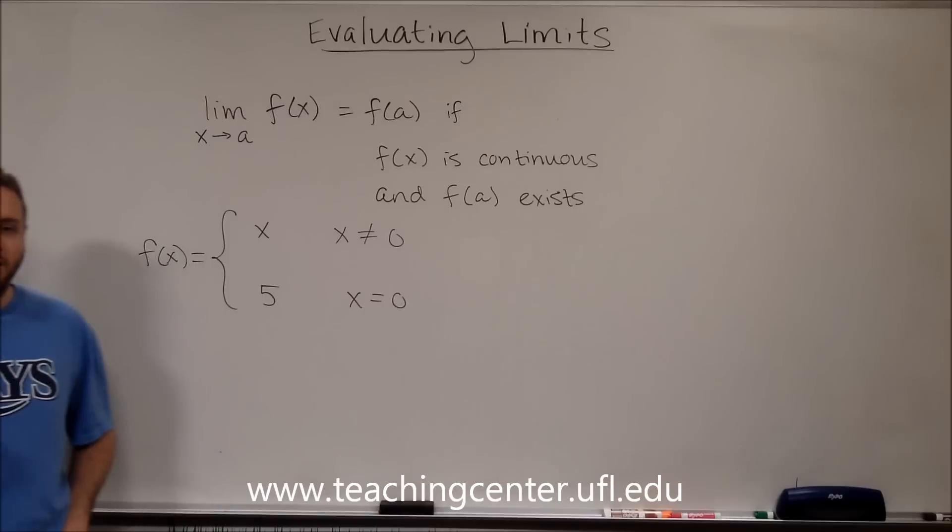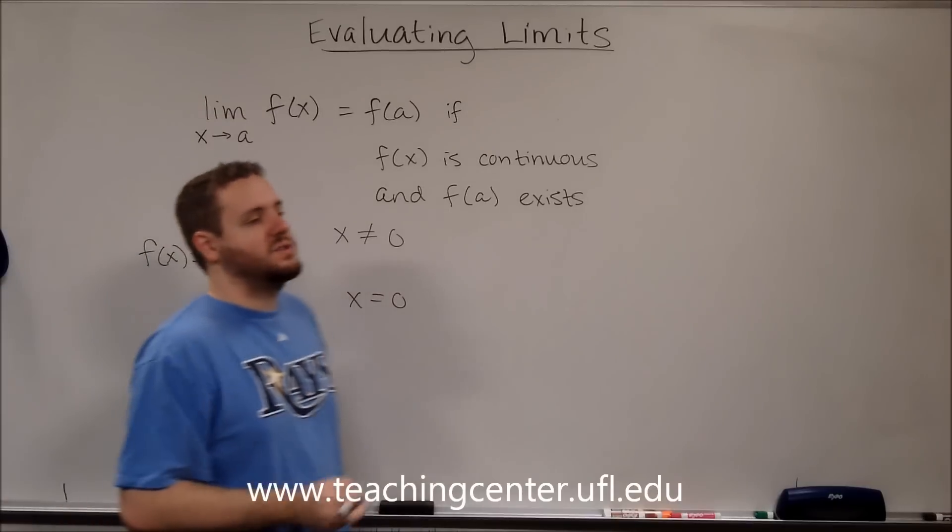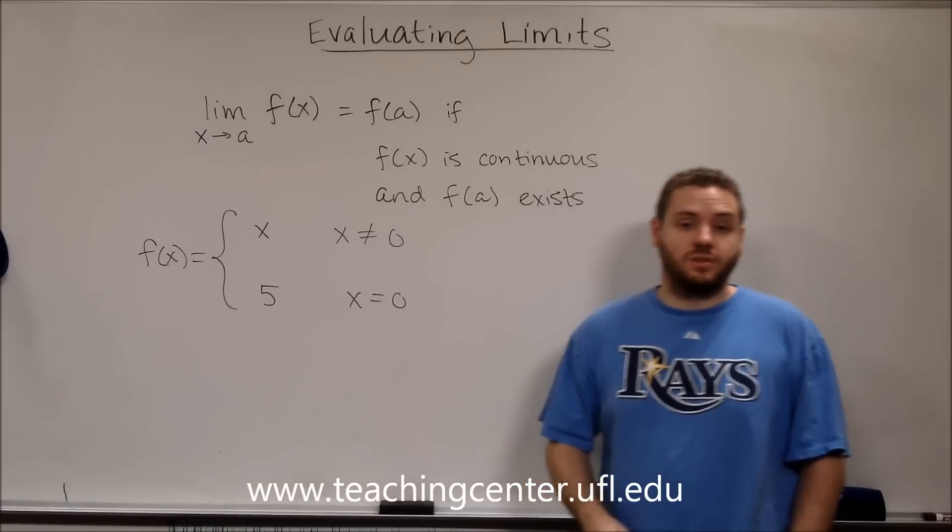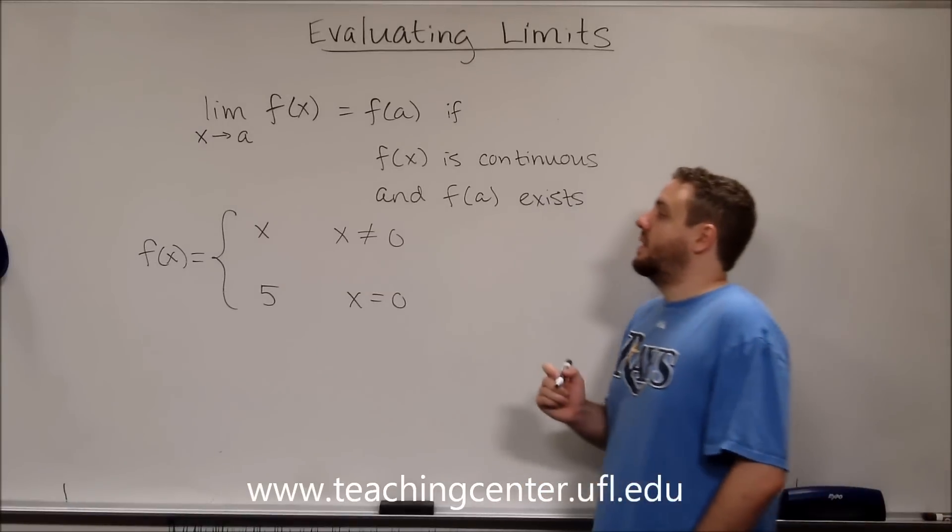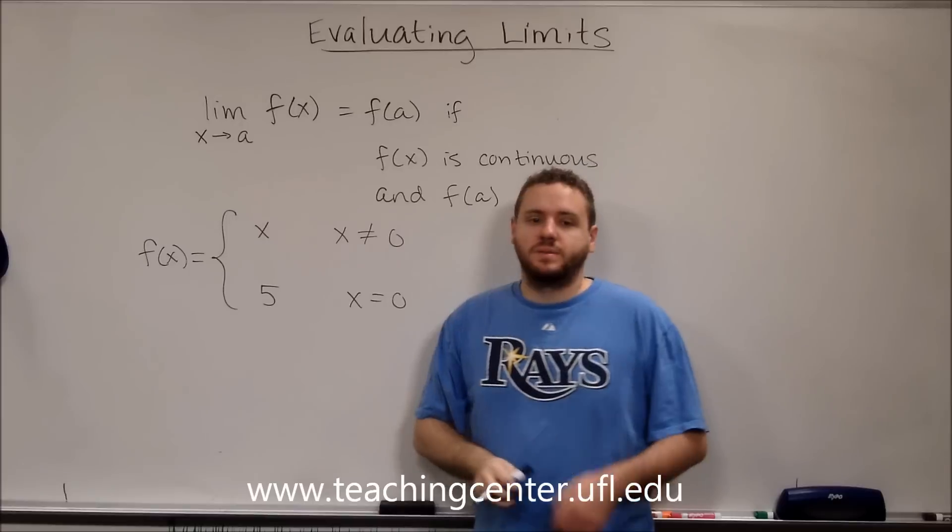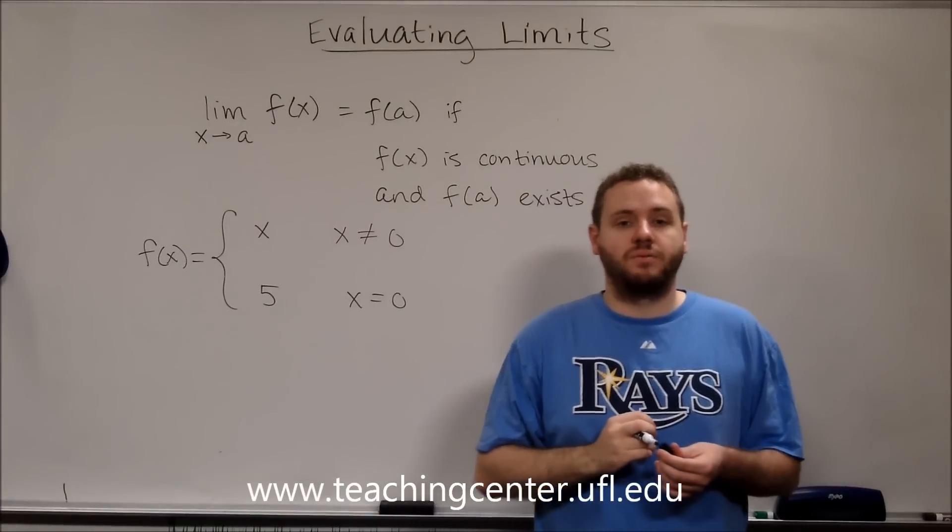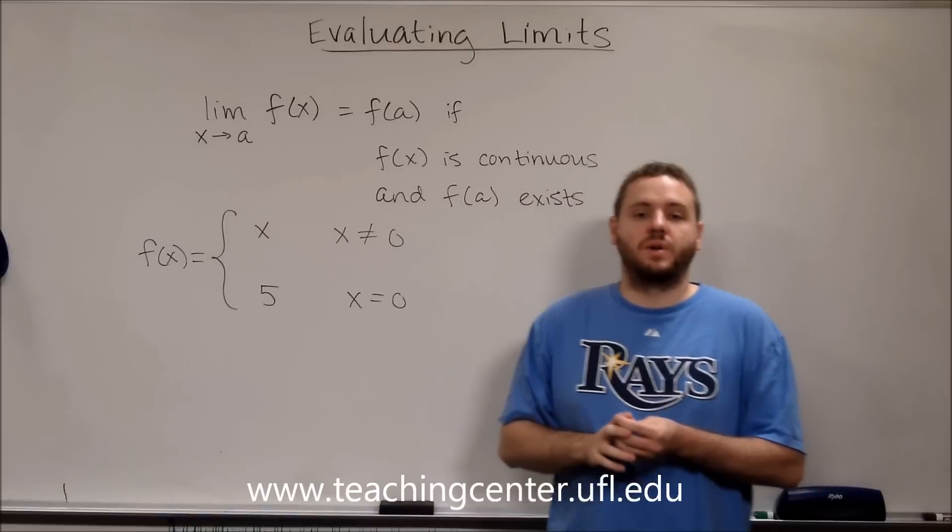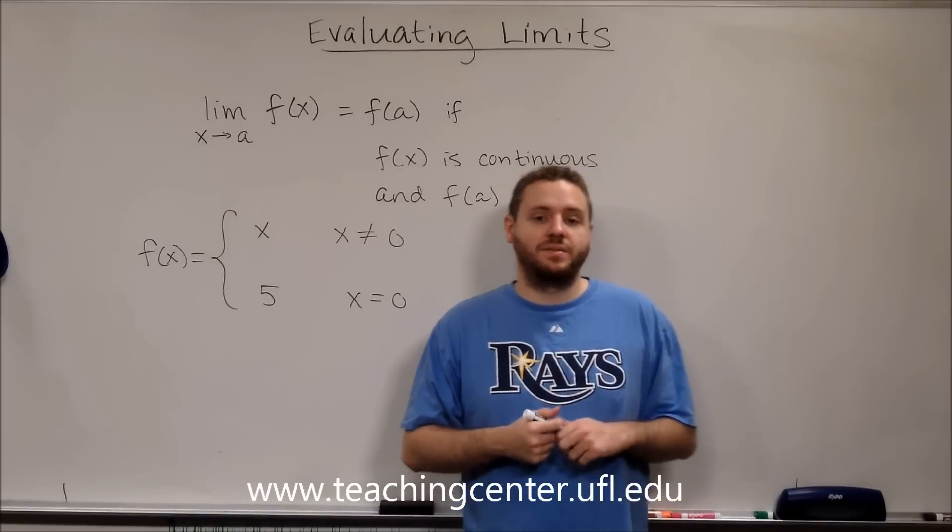And we want to find the limit as x goes to zero. We can't just plug in x goes to zero in this case, because that would give us five and that's not correct. In addition to being able to use this rule, it's important to note that whenever you're trying to solve a limit, you're really doing the limit from the left and from the right, you're doing the one sided limits and they have to be the same.